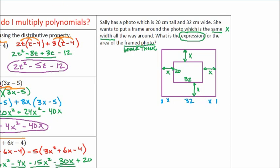To find the dimensions of the bottom of the frame, it's just x plus 32 plus x. We can simplify that: 32 plus — how many x's do we have? We've got two x's. That's 32 plus 2x. You've learned how to add monomials. These are like terms — the x terms — that's 1x plus 1x, which is just 2x. So there's our dimension for the length of our frame: 32 plus 2x.